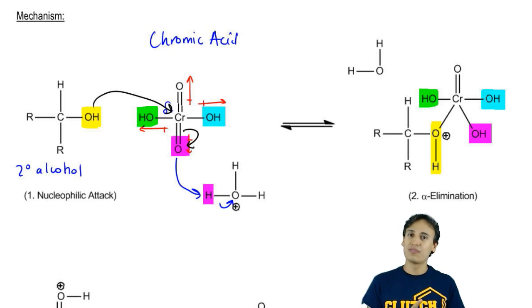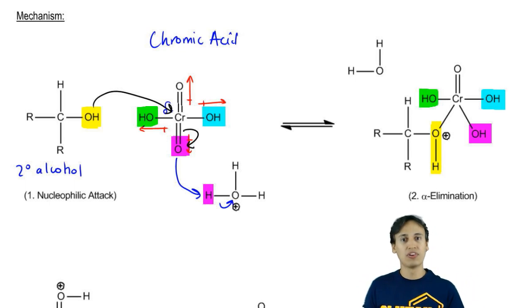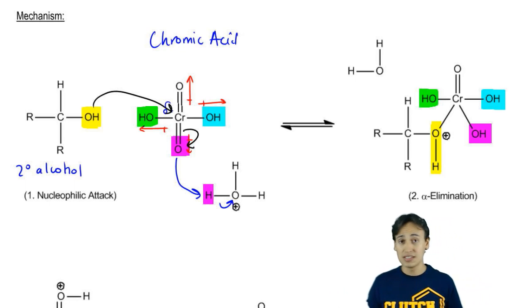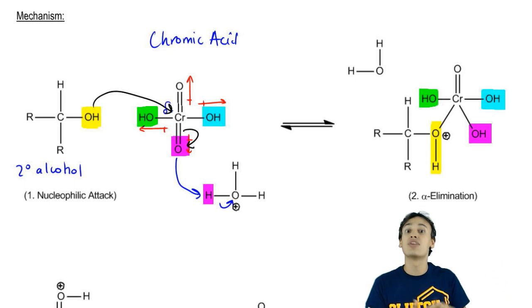Now we did our nucleophilic attack. The next step is a very kind of interesting and rare step called alpha elimination. You've heard of elimination reactions already. They make double bonds. We've always dealt with beta elimination. Beta elimination is kind of just the go-to elimination that we use. But in some specific mechanisms in organic chemistry, we actually see alpha eliminations take place and oxidation is one of them. Oxidation mechanisms have a lot of alpha elimination.